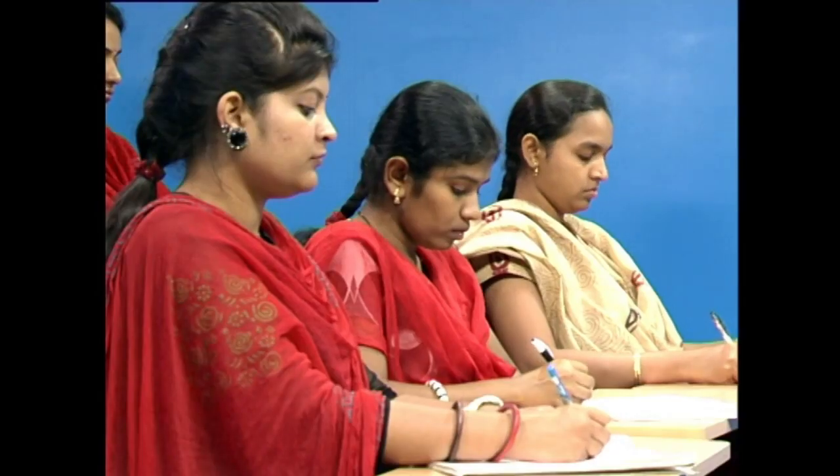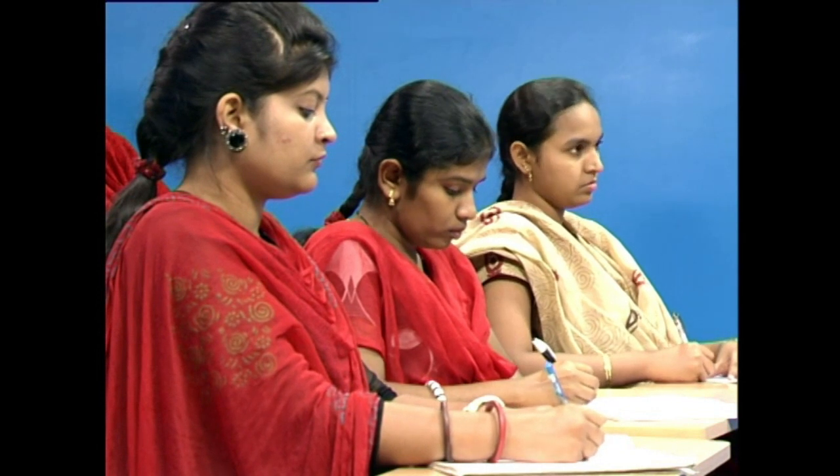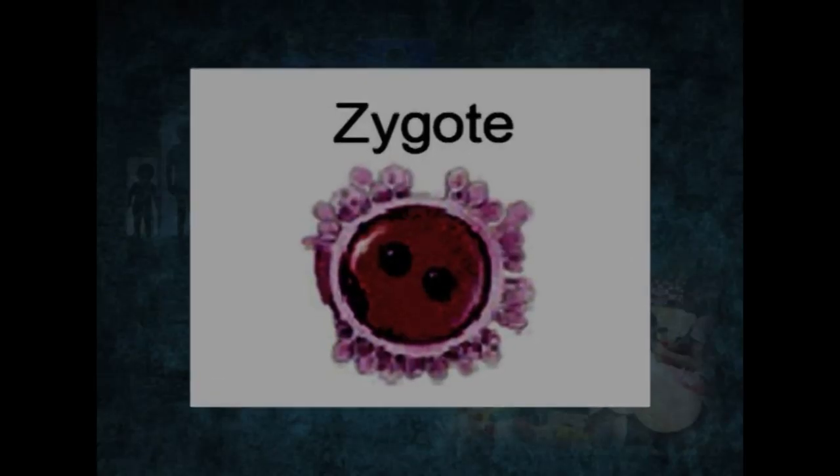The first stage of the prenatal period is the germinal period. The germinal period is the period of prenatal development that takes place in the first two weeks after conception. It includes the creation of the fertilized egg, which is called a zygote. Cell division and attachment of the zygote to the uterine wall takes place during this period. The rapid cell division by the zygote begins the germinal period.